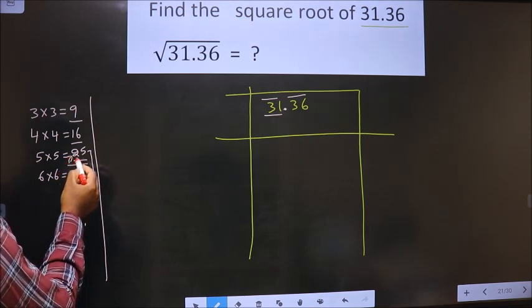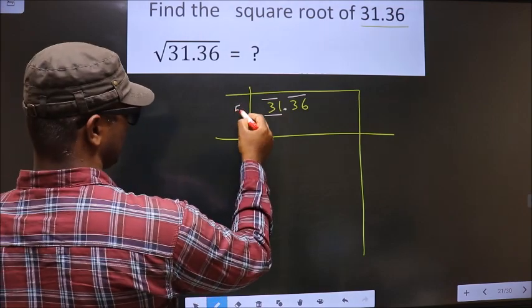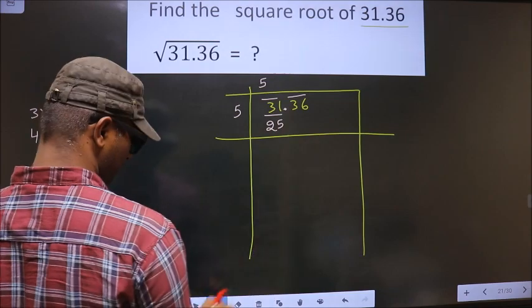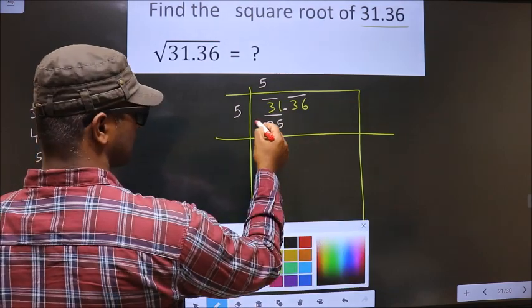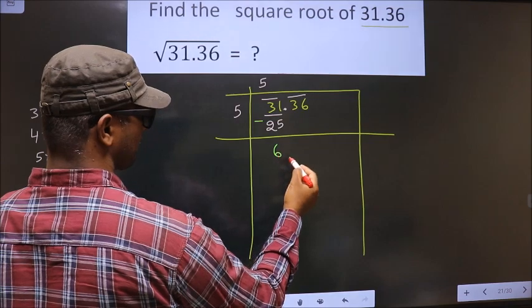25 is 5 times 5, so 5 times 5 is 25. Now subtract: 31 minus 25 is 6.